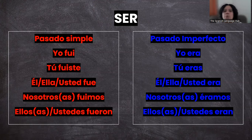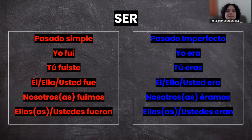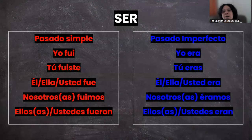Okay, let's start with the conjugations, in case you don't know, or just to review. Pasado simple: yo fui, tú fuiste, él/ella/usted fue, nosotros/nosotras fuimos, ellos/ellas/ustedes fueron.